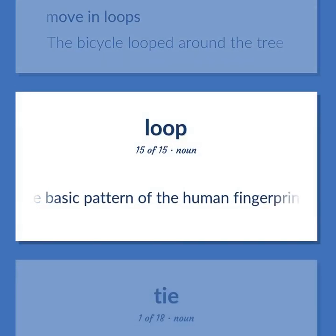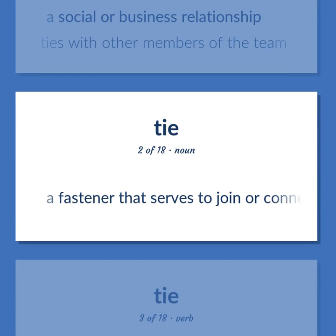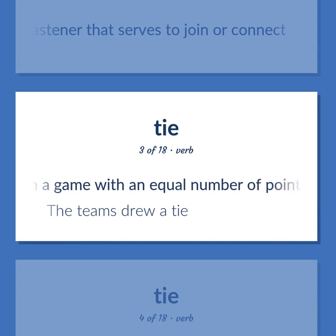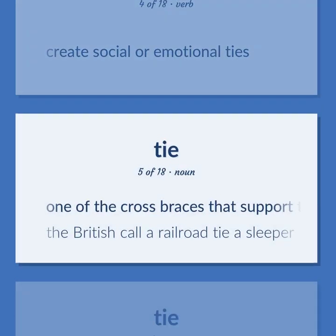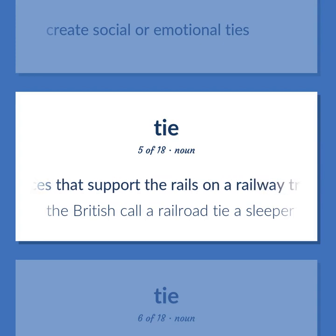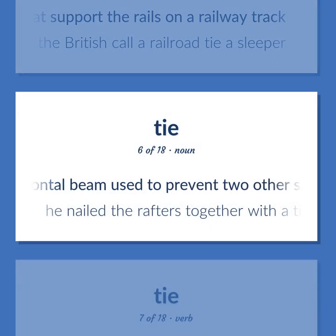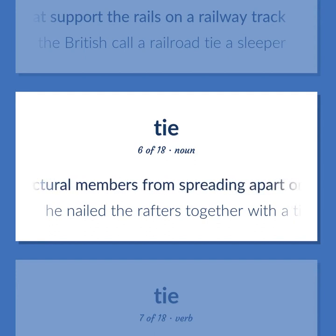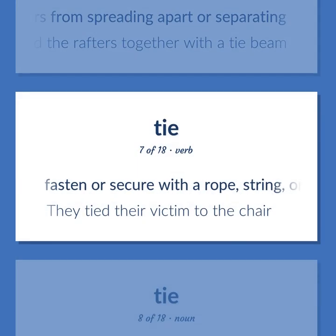A social or business relationship. He was sorry he had to sever his ties with other members of the team. A fastener that serves to join or connect. Finish a game with an equal number of points, goals, etc. The teams drew a tie. Create social or emotional ties. One of the cross braces that support the rails on a railway track. The British call a railroad tie a sleeper. A horizontal beam used to prevent two other structural members from spreading apart or separating. He nailed the rafters together with a tie beam. Fasten or secure with a rope, string, or cord.